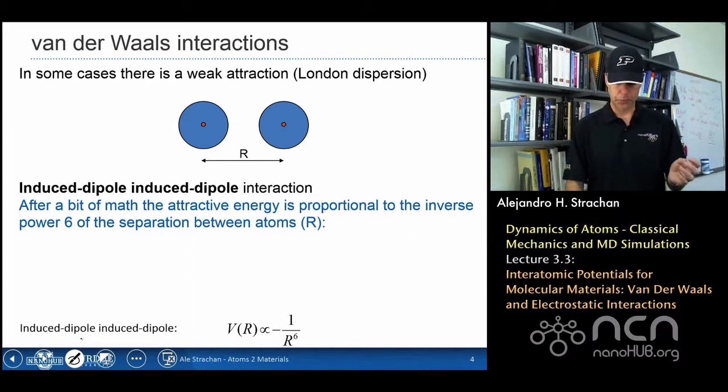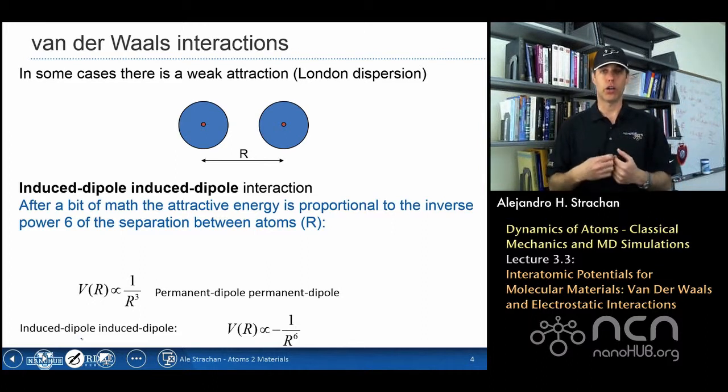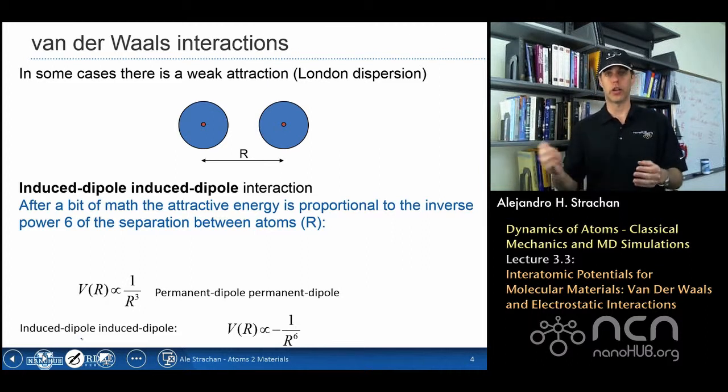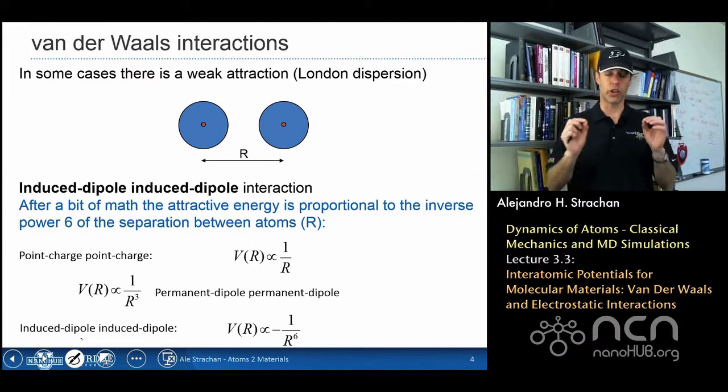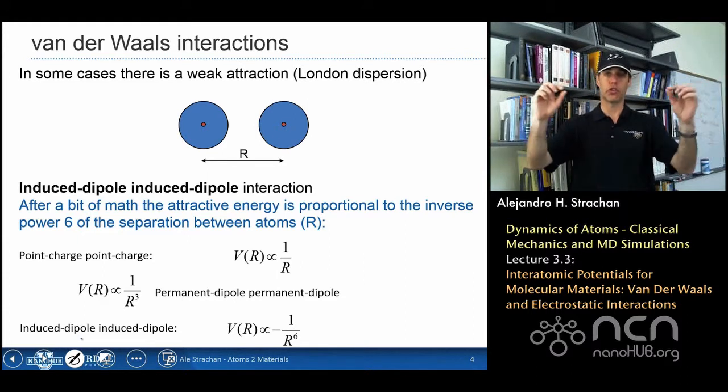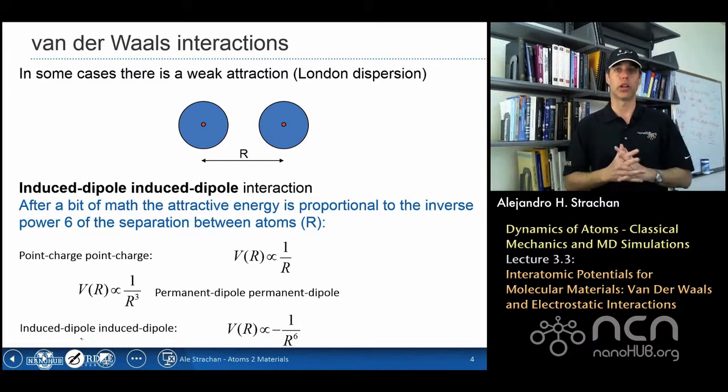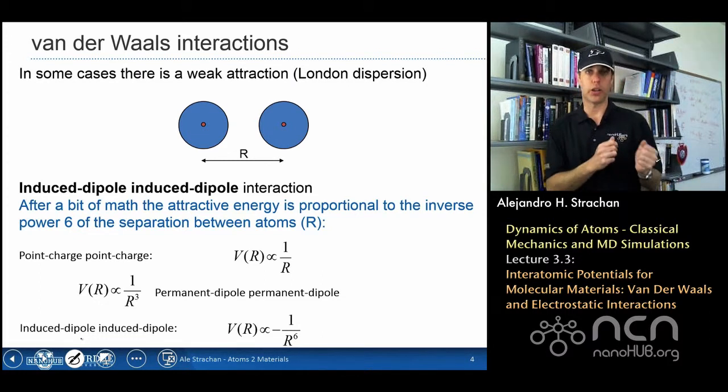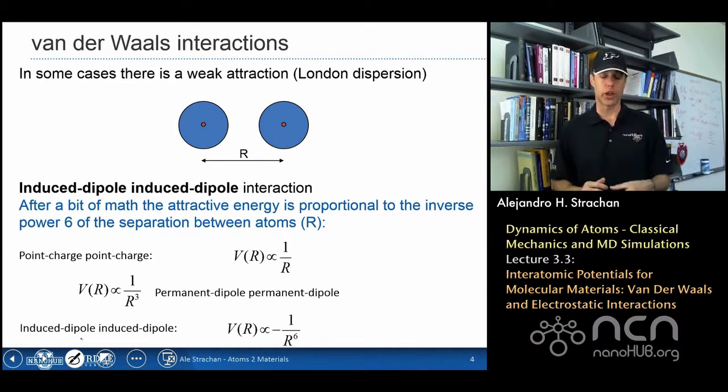Just to compare, a permanent dipole-permanent dipole interaction decreases with 1 over r to the power of 3, so it's a weaker decrease in the interaction. And of course, a point charge and a point charge interaction is 1 over r, so very long distance. So you can see from point charge to point charge, very long range interactions, permanent dipole-permanent dipole, the interactions decay much faster with 1 over r to the power of 3, and this induced dipole-induced dipole that dominate London dispersion even faster, r to the power of 6, so it's a short range and actually weak interaction.